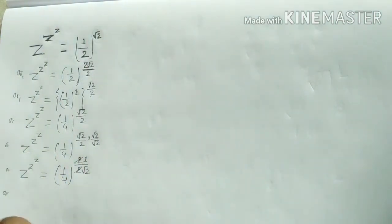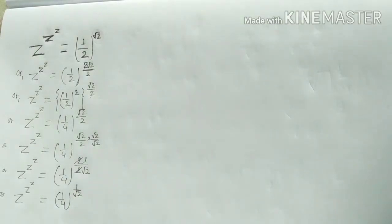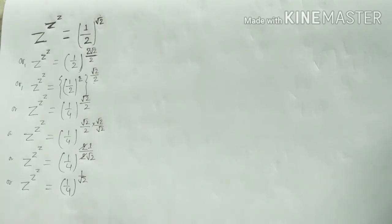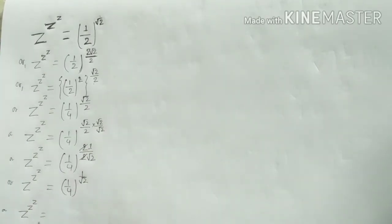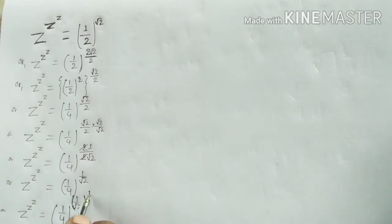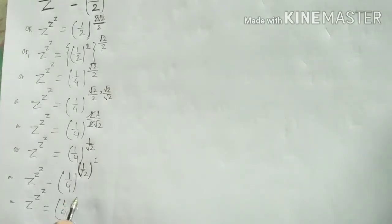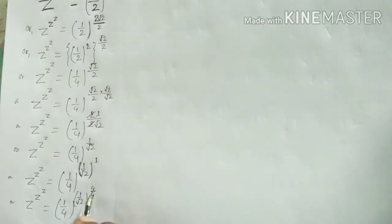Finally we do have 1 in the numerator. So z to the power z to the power z to the power z to the power z is equal to 1 by 4 to the power 1 by root over 2. Now we can write this as 1 by 4 to the power 1 by root over 2 to the power there is nothing, meaning its power is 1. Now we can write it with power 1. So z to the power z to the power z is equal to 1 by 4 to the power 1 by root 2 to the power — and the power is 4 by 4, because 4 divided by 4 equals 1.